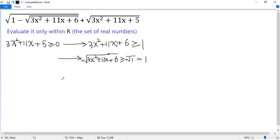On the other hand, look at the first square root again. 1 - √(3x² + 11x + 6) must be non-negative. That means √(3x² + 11x + 6) ≤ 1.